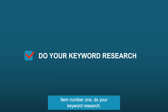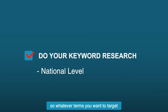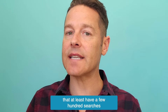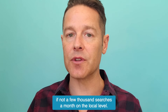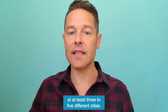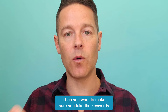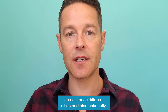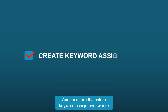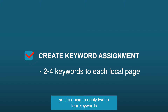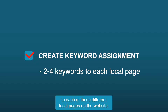Item number one: do your keyword research. Do it on the national level — whatever terms you want to target, look at them on both the national and local level. You're going to want to be looking for terms that at least have a few hundred searches, if not a few thousand searches a month on the local level. Then you're going to want to look at at least three to five different cities. Take the keywords that have the highest search volume across those different cities and nationally, and turn that into a keyword assignment where you apply two to four keywords to each of your local pages.